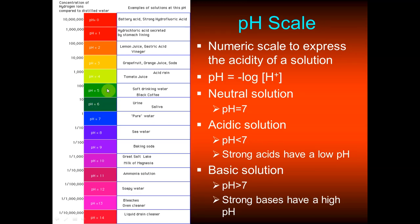A pH of 5 or 6 would be weakly acidic — like urine or carbonated water or soda. A pH of 0 is a strong acid, like battery acid or hydrofluoric acid. A pH greater than 7 is a basic solution: weakly basic like seawater, or strongly basic like liquid drain cleaner at pH 14. We'll revisit pH when we discuss climate change and ocean acidification — the gradual lowering of ocean water pH due to dissolution of carbon dioxide from the atmosphere.